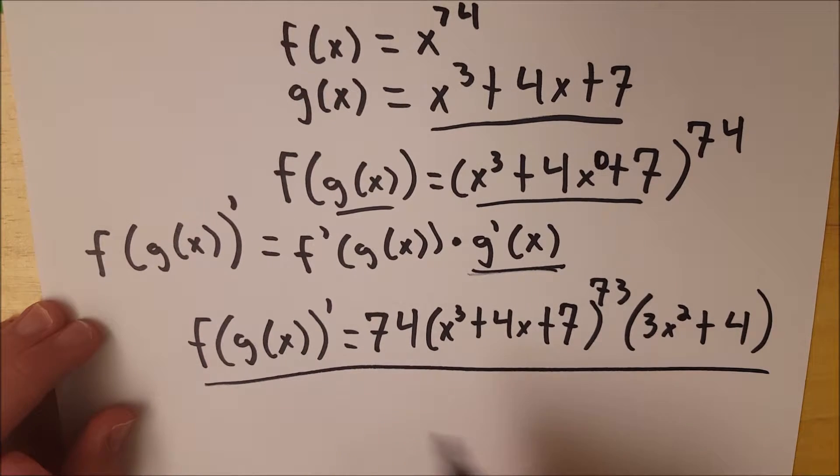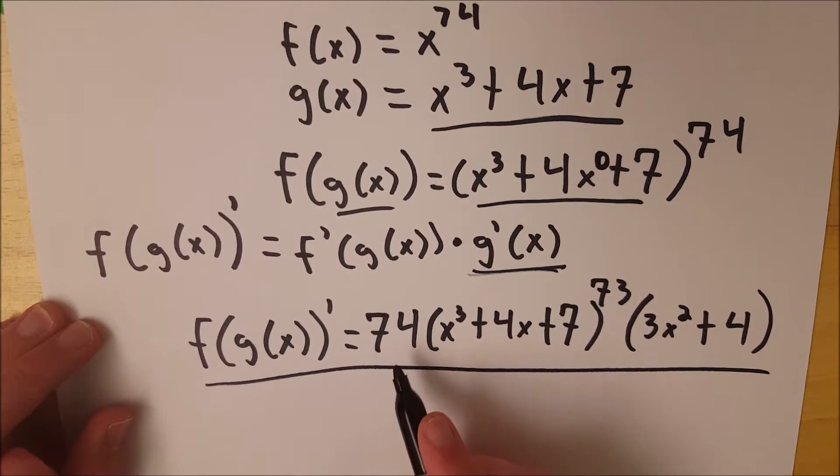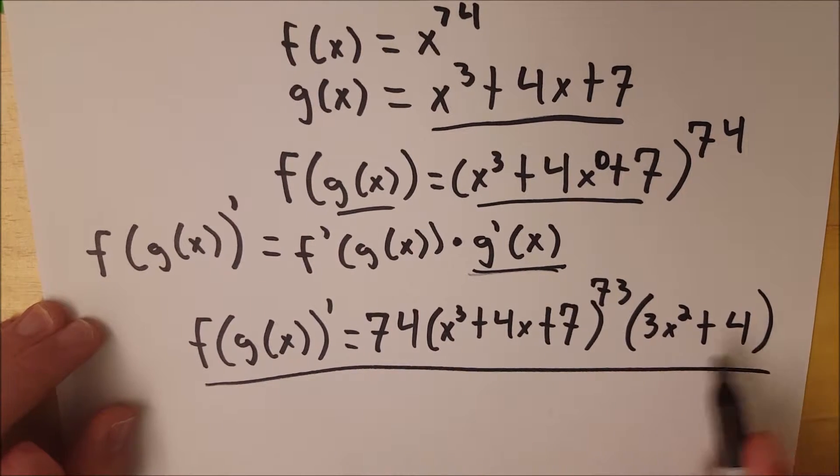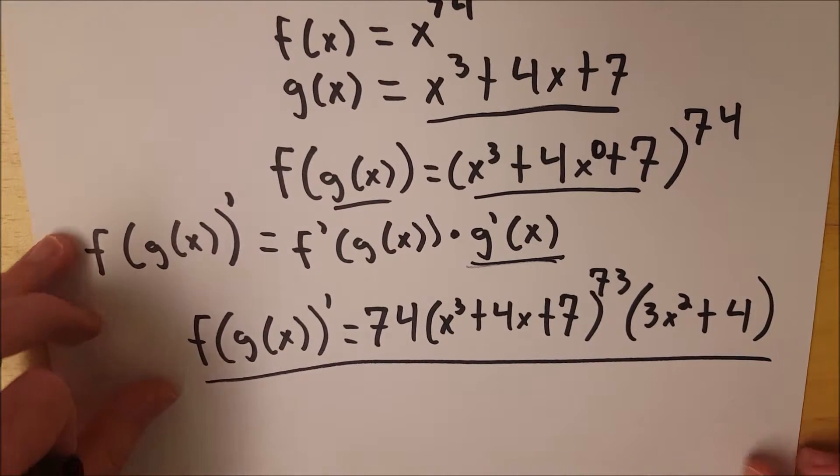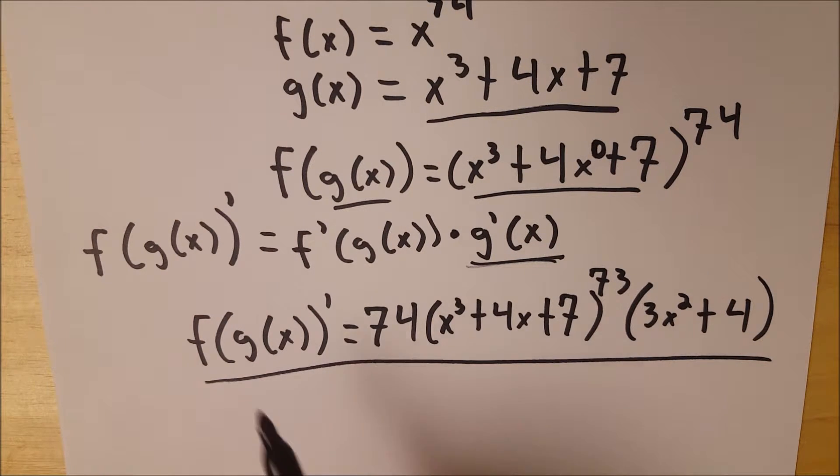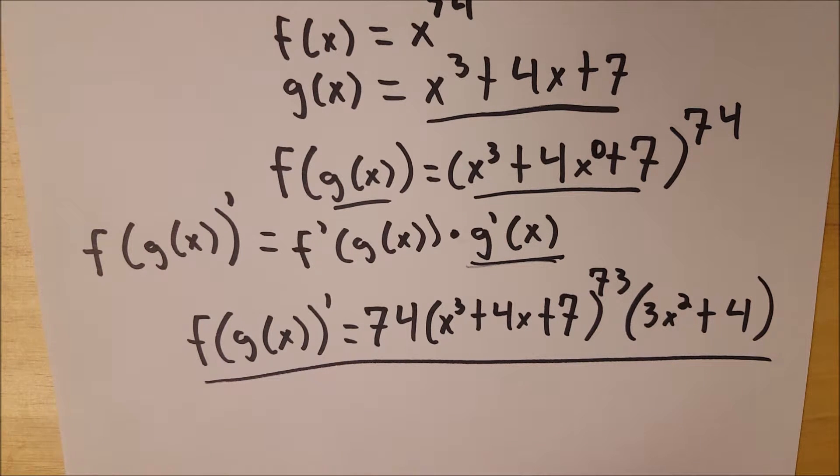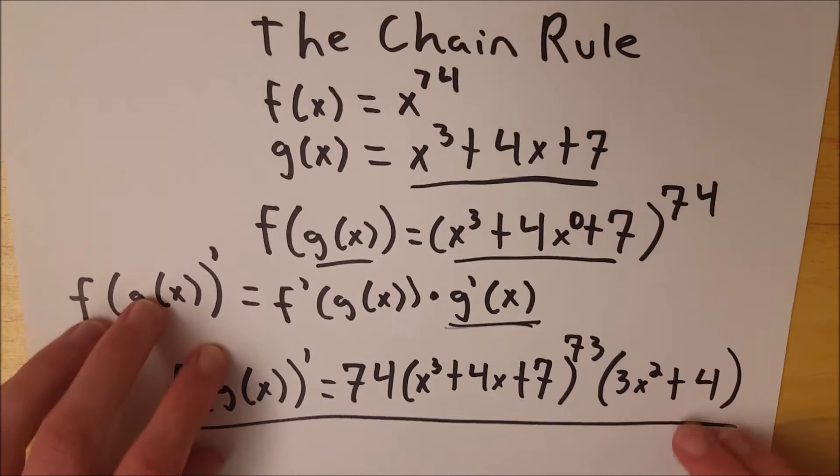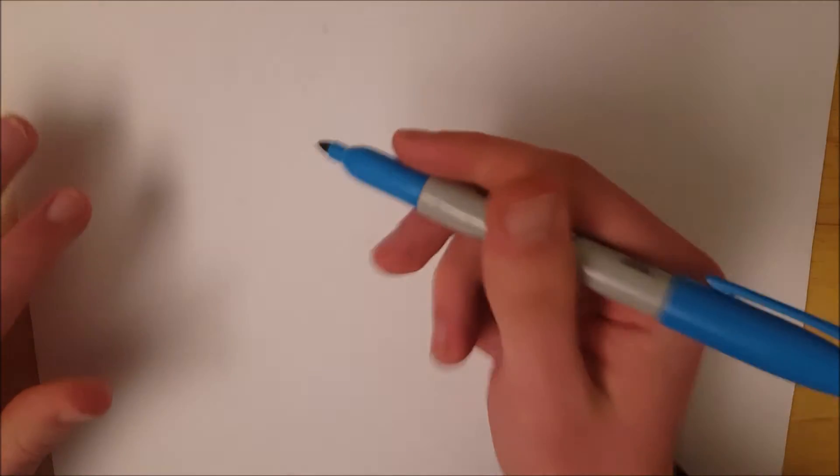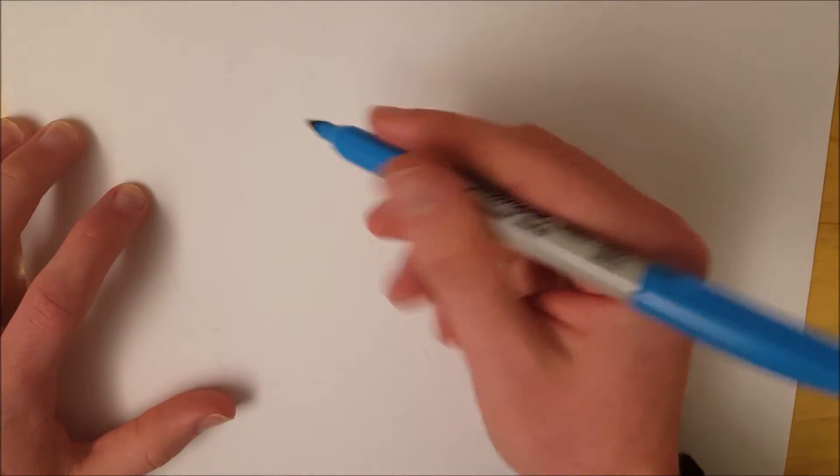Of course you can simplify it a bit. If you wanted to, you can multiply the 74 through this bit here in the parentheses and you could call that your final answer. But this is the derivative of f of g of x. Let's do one more example and hopefully that will be enough to give you a good solid understanding of the chain rule. I'm going to switch up the colors for once. We're going to use a beautiful light blue for this example.